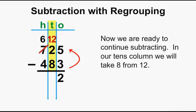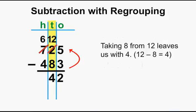Now we are ready to continue subtracting. In our tens column, we will take 8 from 12. Taking 8 from 12 leaves us with 4. 12 subtract 8 equals 4.